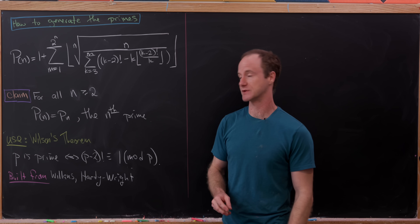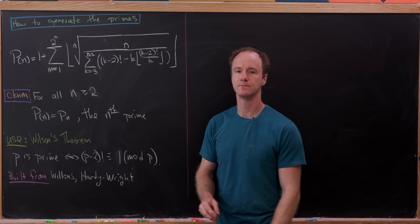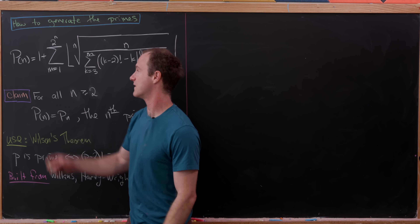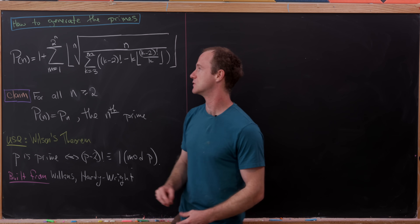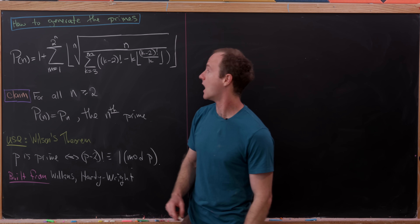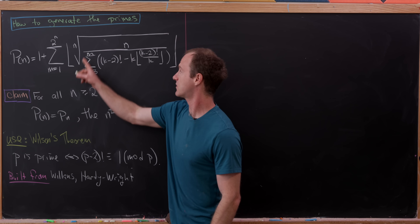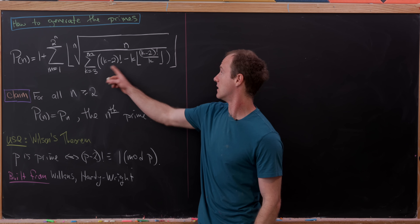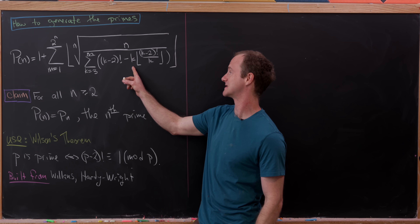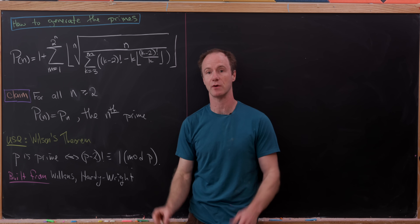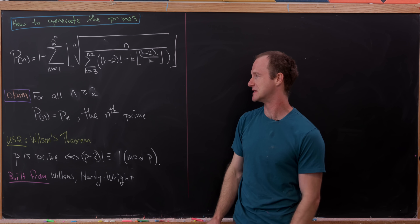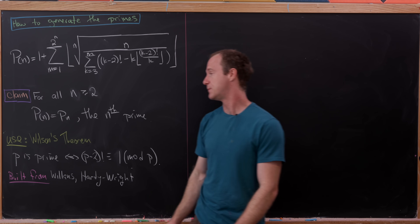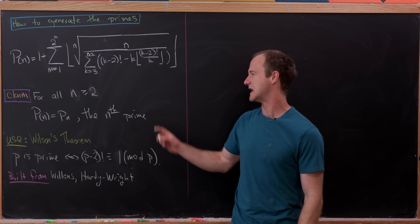That being said, I think it's still pretty interesting. We'll define the function p(n) to be 1 plus the sum as m goes from 1 to 2^n of the floor of the nth root of n over the sum as k goes from 3 to m of (k minus 2) factorial minus k times the floor of (k minus 2) factorial over k. Our claim is that for n greater than or equal to 2, p(n) equals p_n, the nth prime number.